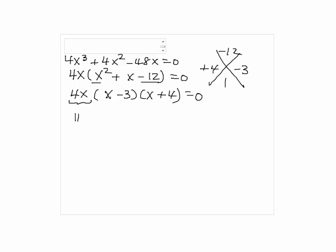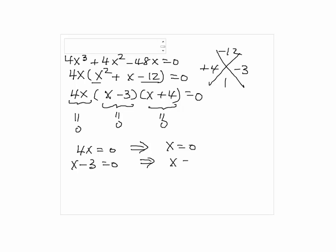We set each factor equal to 0. So 4x equals 0, which gives us x equals 0; and x minus 3 equals 0, so x equals 3; and x plus 4 equals 0.